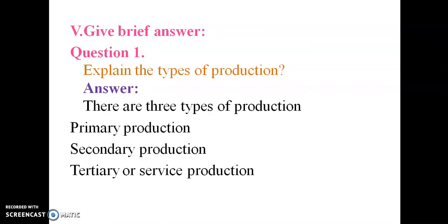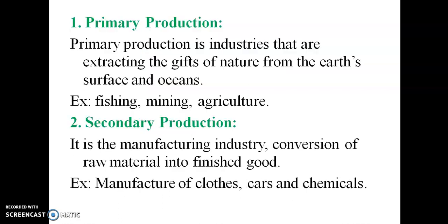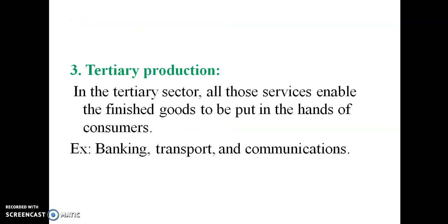Explain the types of production. There are three types of production: primary, secondary, and tertiary or service production. Primary production includes fishing, mining, and agriculture. Secondary production includes manufacturing companies. Tertiary or service production includes banking, transportation, army, doctors, teachers, etc.